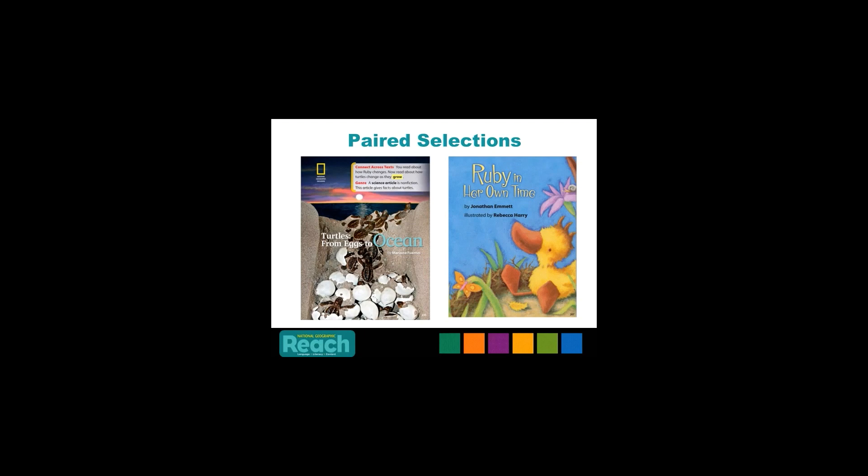Here is another example of the paired readings from grade 1, where we pair a National Geographic-exclusive science article titled Turtles from Eggs to Ocean with a wonderful award-winning story, Ruby in Her Own Time. These reading selections will really keep your students engaged and also provide the rigorous instruction needed for academic success.